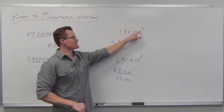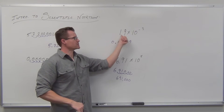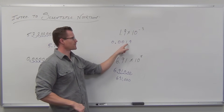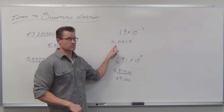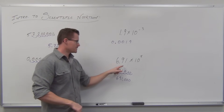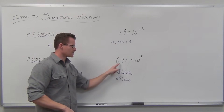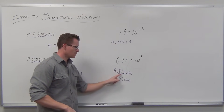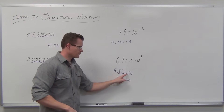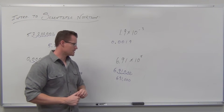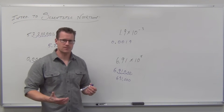That way, when you see these, it makes a little more sense. 1.9 times 10 to the negative 3 takes the decimal and moves it three spots left — giving 0.0019. And 6.91 times 10 to the fifth takes the decimal and moves it five spots to the right — giving 691,000.